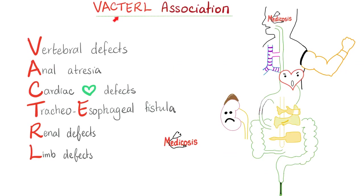An acronym is an atrocious way to memorize. A better way: one picture is worth a thousand words. So let's do it. You see this? That's the tracheoesophageal fistula. You see this? Those are the limb defects. How about this? Cardiac problems. And this? Vertebral defects.